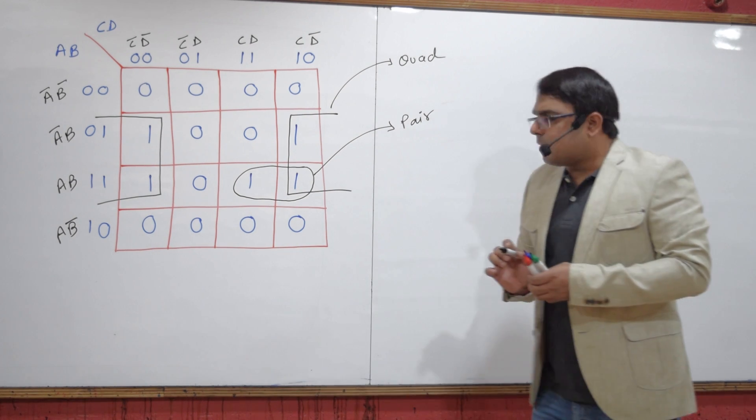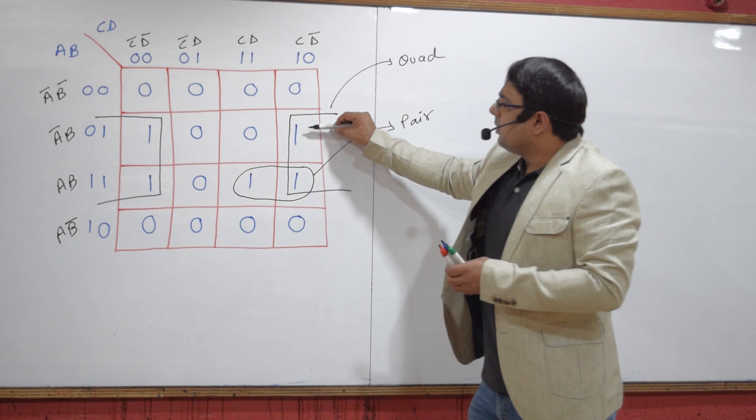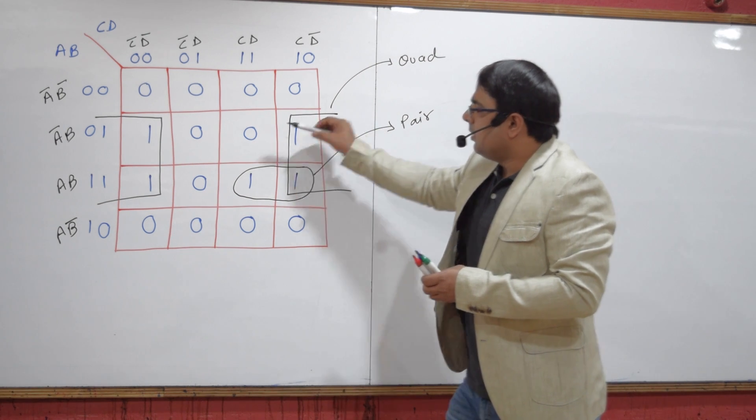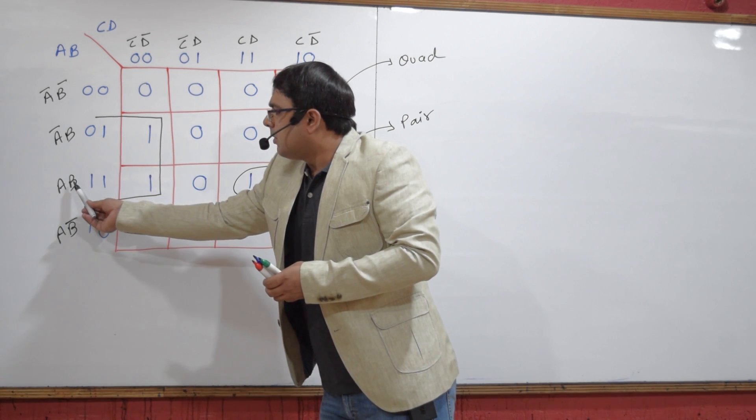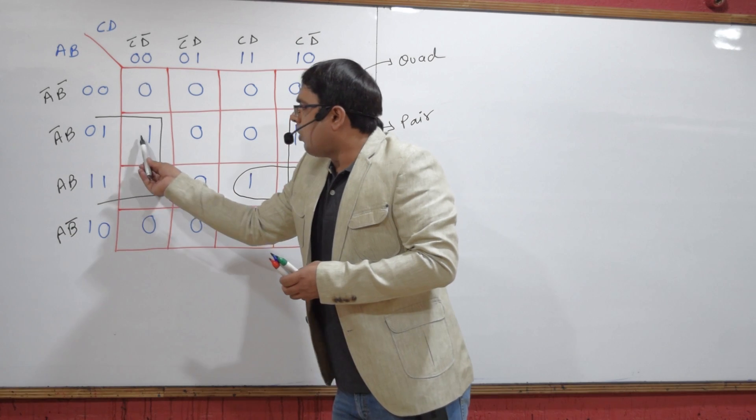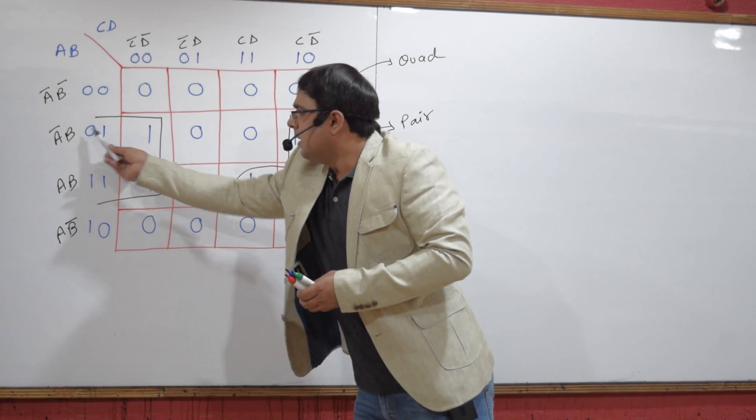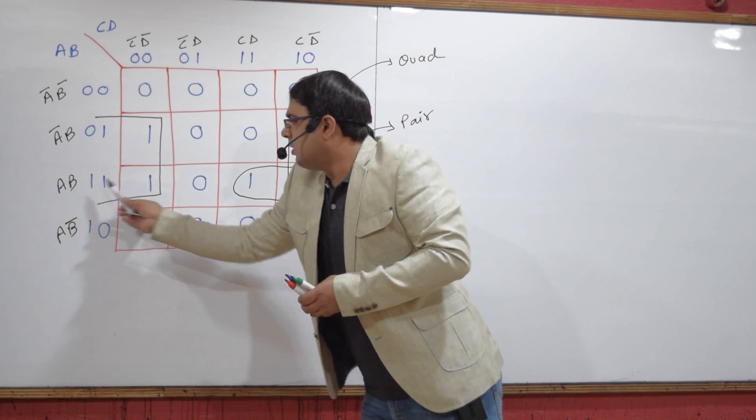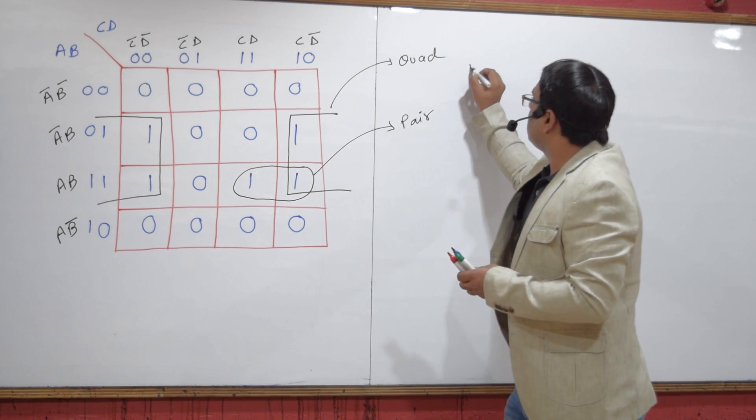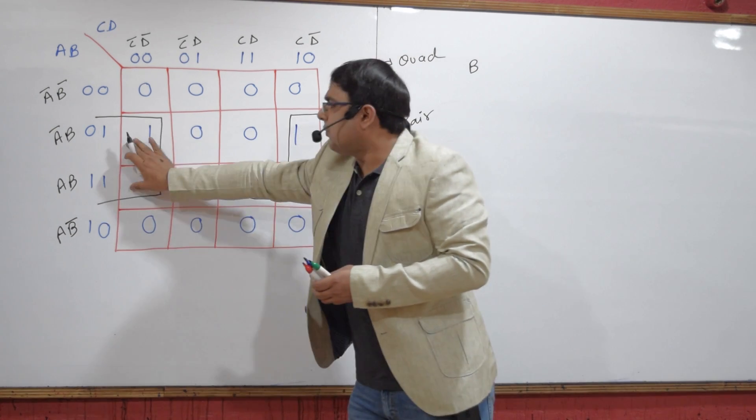So I have to write down the terms here. For this quad, what is constant? B is constant for all the min terms. You can see B for these two min terms and B for these two min terms. So one term is B.